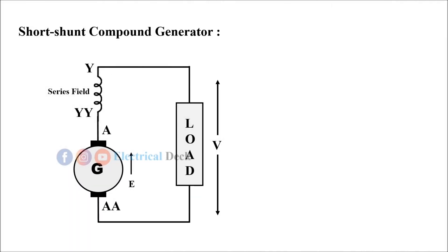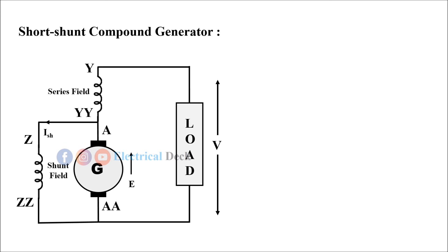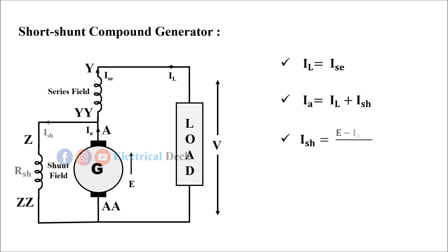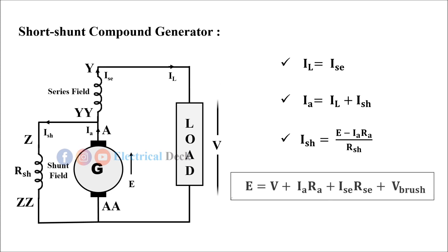In the short shunt compound generator, the shunt field winding is connected only across the armature winding. Series field current equals load current, and armature current is the sum of series field current and shunt field current. Here, the shunt field current I_sh is given by the induced EMF E (without armature resistance drop) divided by the shunt field resistance R_sh. The voltage equation for the DC short shunt compound generator is the same as the series generator.